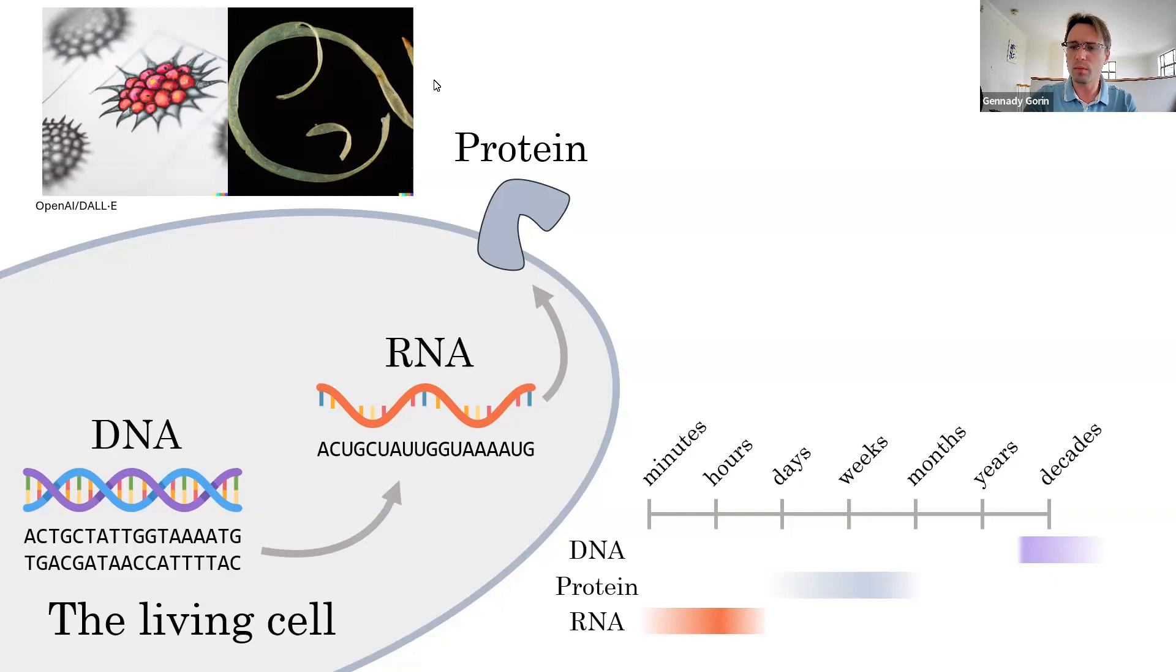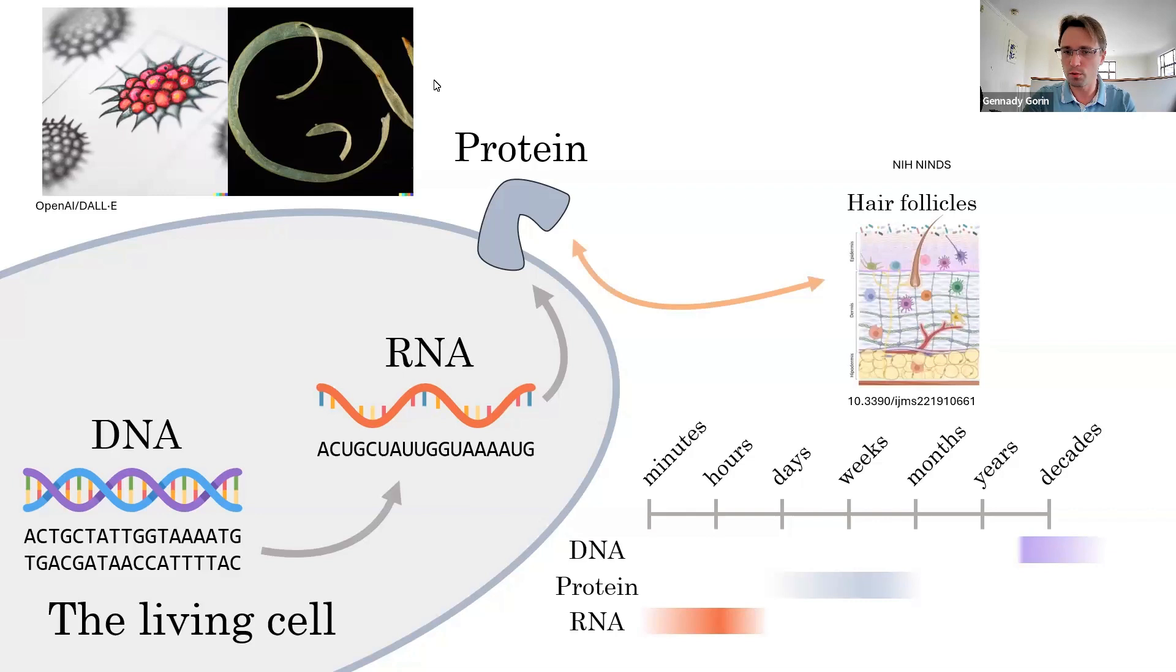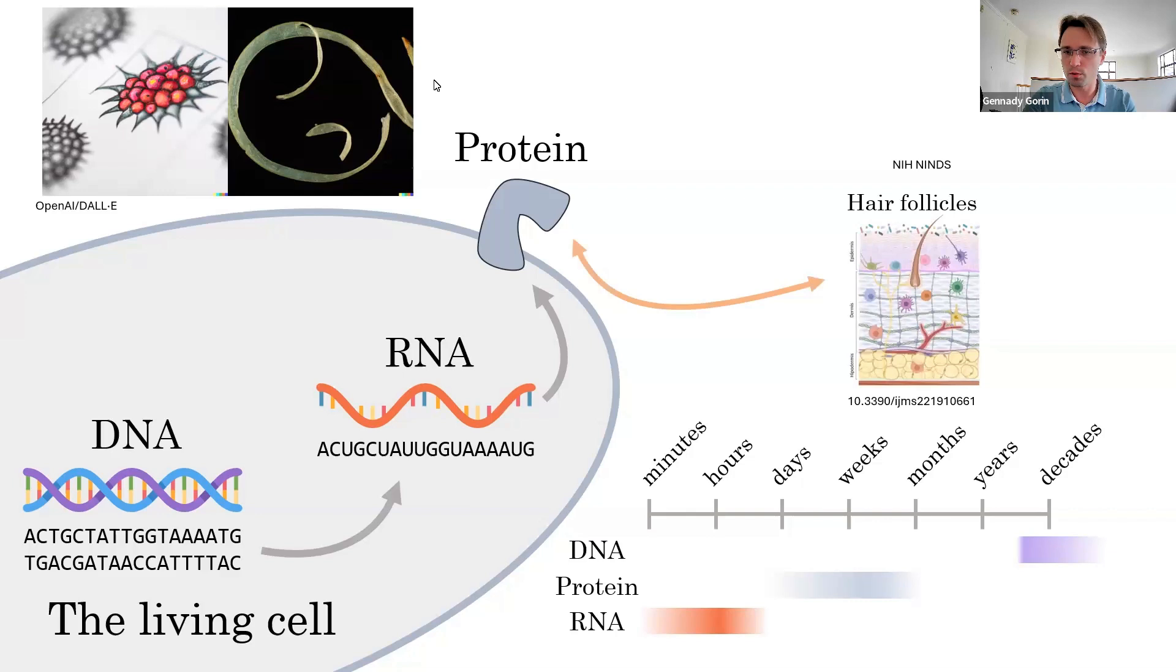Which RNA are present controls which proteins are produced. This, in turn, determines the cell's function and structure and allows the cell to respond on shorter time scales. So, when we talk about things like cell types, we're talking about precisely that function and structure. We'll look at hair follicle cells. They make hair proteins. We'll look at nerve cells. They produce neurotransmitters. Or, in other words, this basic conceptual picture provides a foundation for axiomatizing what a cell type is.